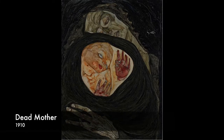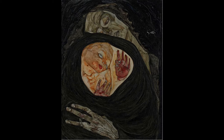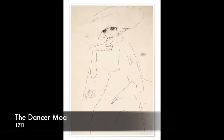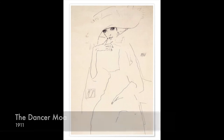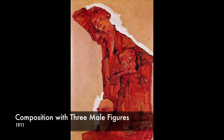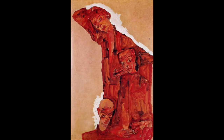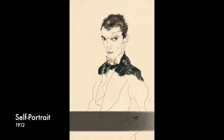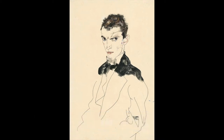Egon Schiele was a figurative painter. It can also be considered early expressionism. His art focused a lot on the human body and human emotions. Sometimes the bodies were contorted, and people believed his work was very grotesque. So today we're going to draw this one that you see right here — it's a self portrait that he did in 1912. I love this one because it almost seems unfinished since he only chose to paint certain parts of it. So we're going to draw that today.